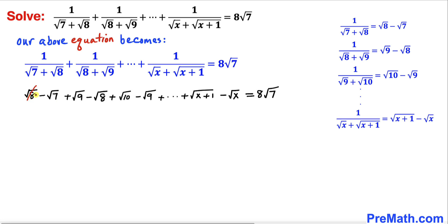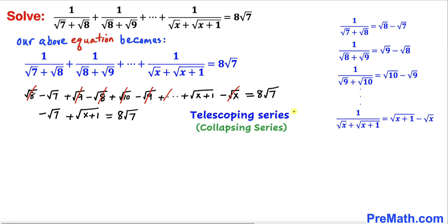We can see that square root of 8 and negative square root of 8 cancel out. Positive square root of 9 and negative square root of 9 cancel as well. Square root of 10 cancels with the next term, and likewise all intermediate terms cancel. On the left hand side we are left with negative square root of 7 plus square root of x plus 1, equals 8 times square root of 7. This kind of series is called a telescoping series as it collapses.